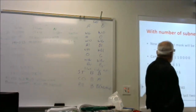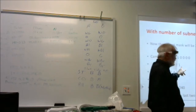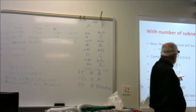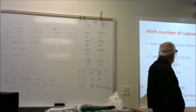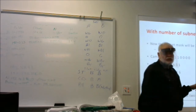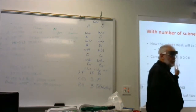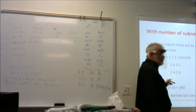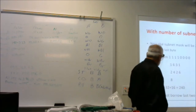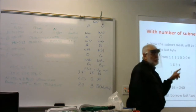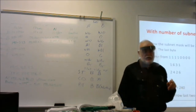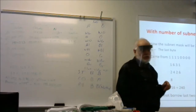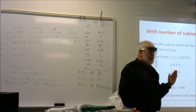To find out what our subnet mask value is — it's 240 — we label our columns from the right: 1, 2, 4, 8, 16, 32, 64, 128. The ones we're going to add up are the first four from the left: 128 + 64 + 32 + 16 = 240. So our last octet on the subnet mask is 240, making the full subnet mask 255.255.255.240.